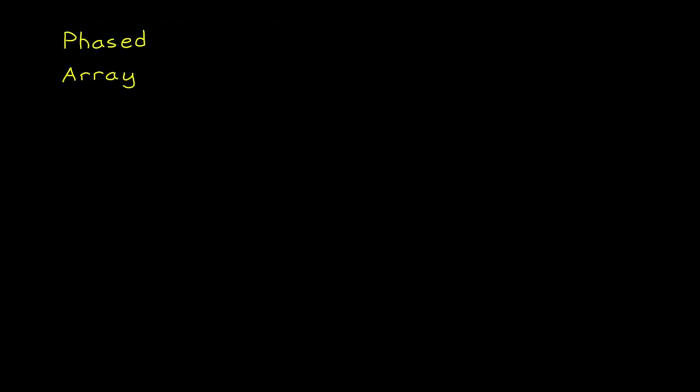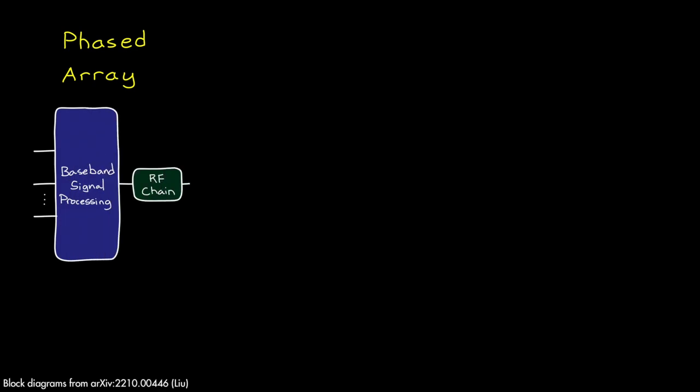In block diagram form, the phased array looks like this. The RF signal is constructed that we want to send, and then that exact RF signal is sent to each antenna element in the array. It's not exactly the same, since there are phase shifters for each element that are used to steer the beam, and there are amplifiers for each element that will allow for gain tapering to control the side lobes. But the underlying RF signal shape is the same, since it's coming from the same RF chain. That signal is just being amplified and shifted.